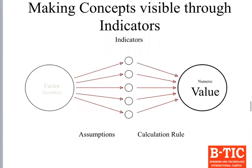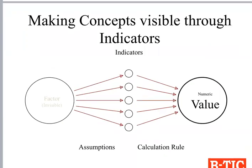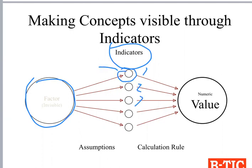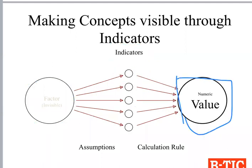So the basic idea is: if you have a factor that is invisible, qualitative, or impossible to measure directly, you develop indicators — as many as you need — measure them, translate them into numeric values, and then do your analysis. Software like SPSS or Minitab can generate graphs automatically with a couple of clicks once you have the numeric values.